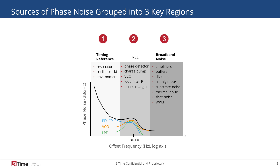If the device includes a phase lock loop to synthesize a new output frequency, then the phase lock loop includes multiple elements that combine to create a characteristic hump as shown here.